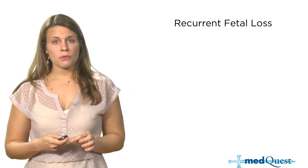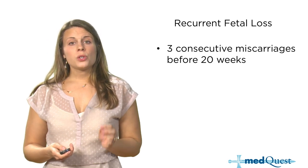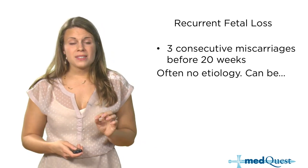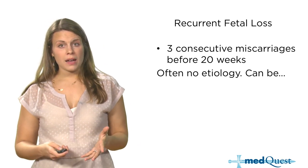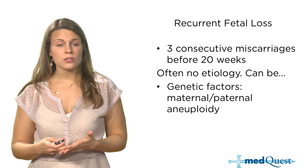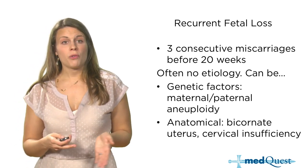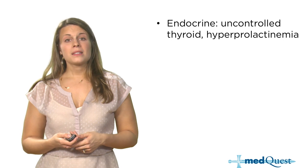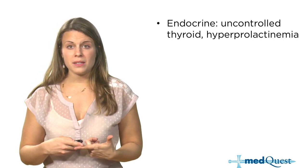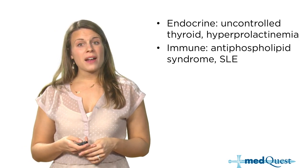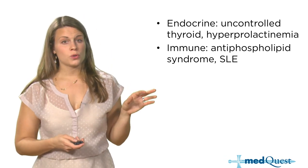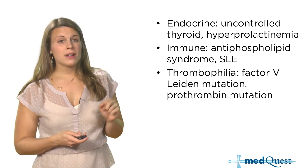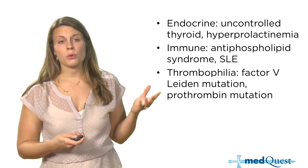Recurrent fetal loss is defined as three consecutive miscarriages before 20 weeks — they must be consecutive. Oftentimes no etiology is found, but causes can include genetic factors such as maternal or paternal aneuploidy, anatomical factors like a bicornuate uterus or cervical insufficiency, endocrine factors like uncontrolled thyroid disease or hyperprolactinemia, and immune-mediated factors like antiphospholipid antibody syndrome and systemic lupus. A thrombophilia workup checking for factor V Leiden and prothrombin gene mutation can also be initiated.